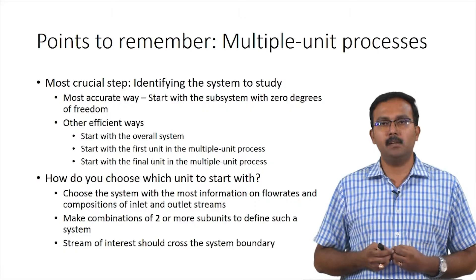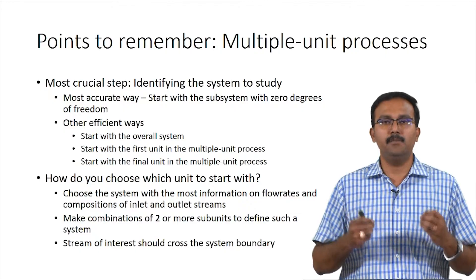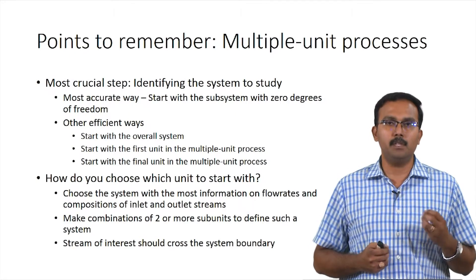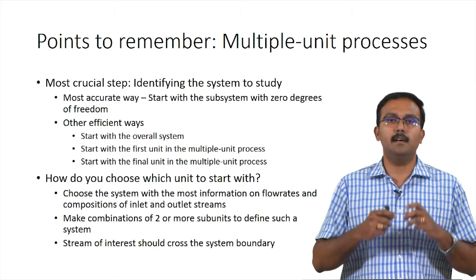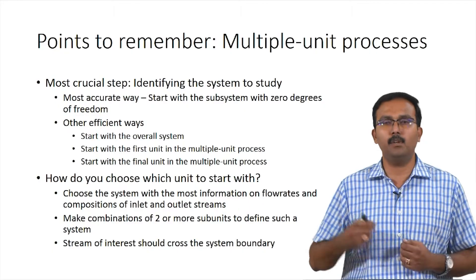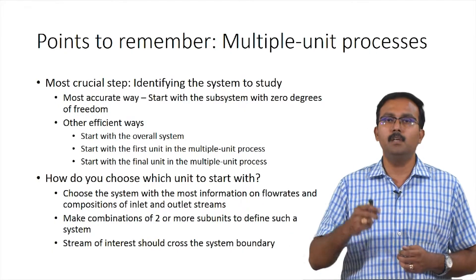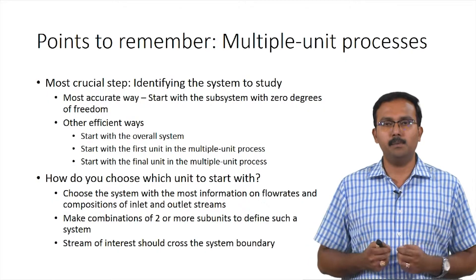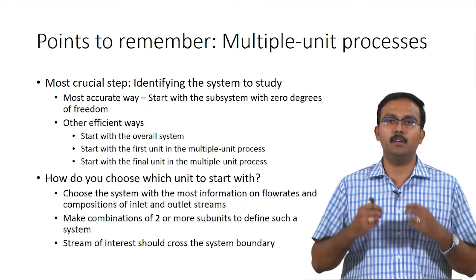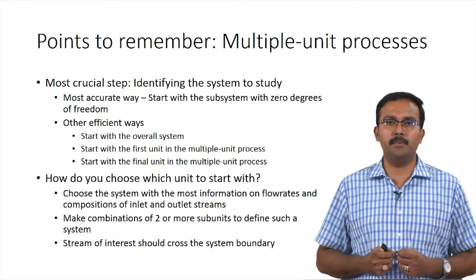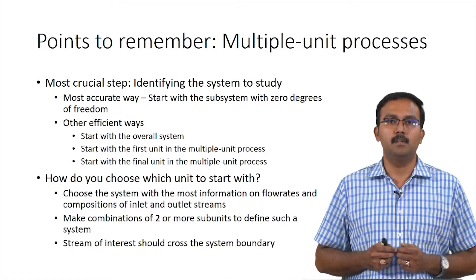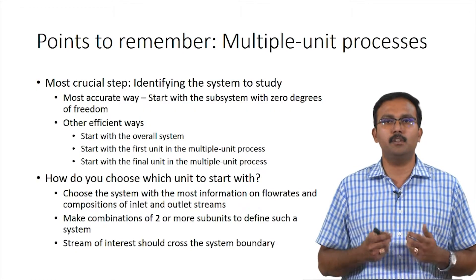Another important aspect when performing calculations is that if we have a stream of interest, that stream must cross the system boundary. If we need to calculate the flow rate or composition of a particular stream, the system drawn should not encompass that stream — it must cross the boundary as either an input or output. Conversely, if we have no information about a stream and it is not of interest, draw the system so that this stream is encompassed within it, so we do not need to calculate its parameters.